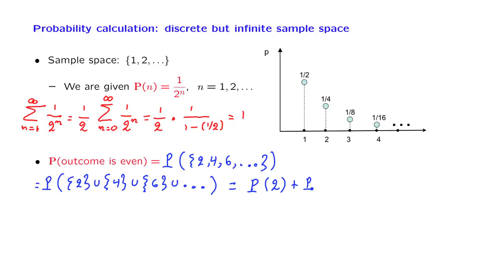So we can use an additivity property and say that this is the probability of obtaining a 2, plus the probability of obtaining a 4, plus the probability of obtaining a 6, and so on.